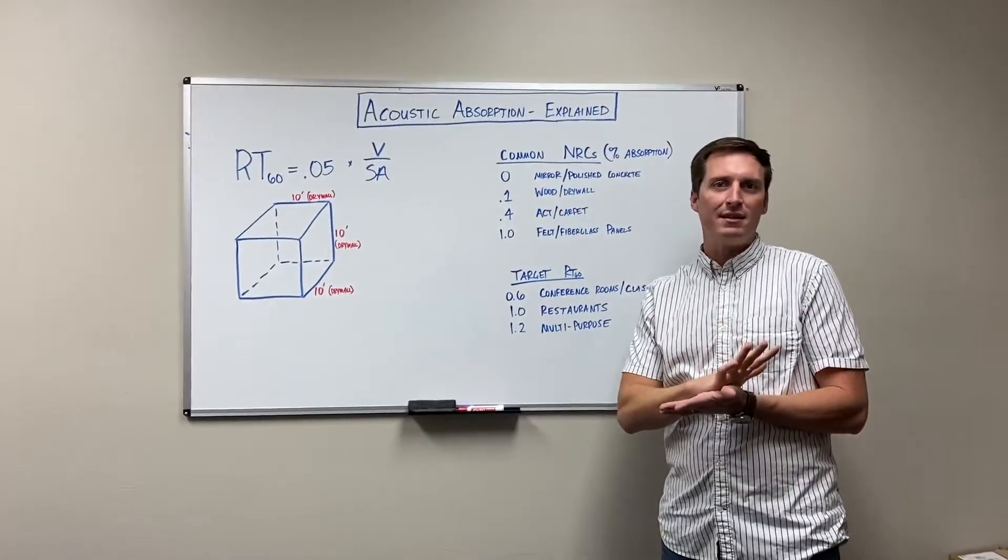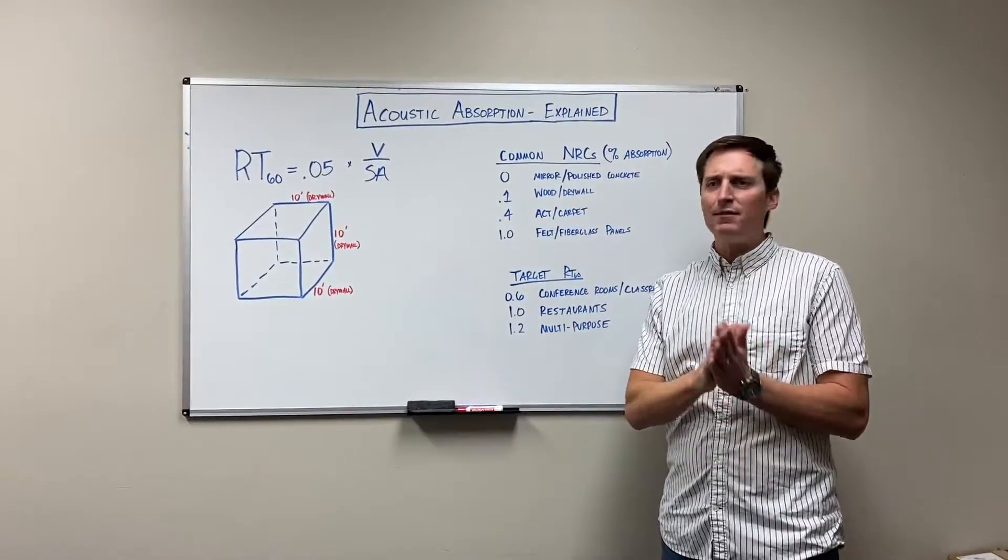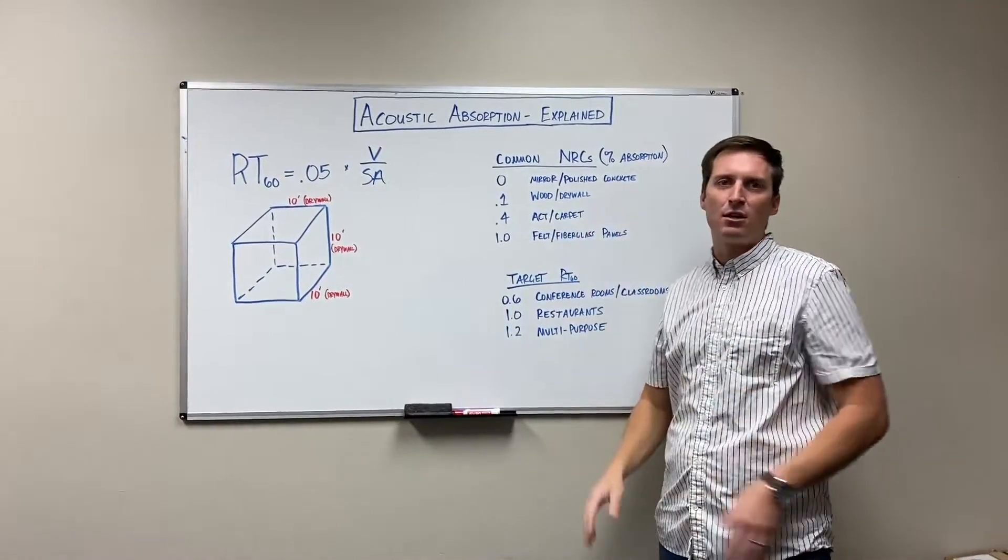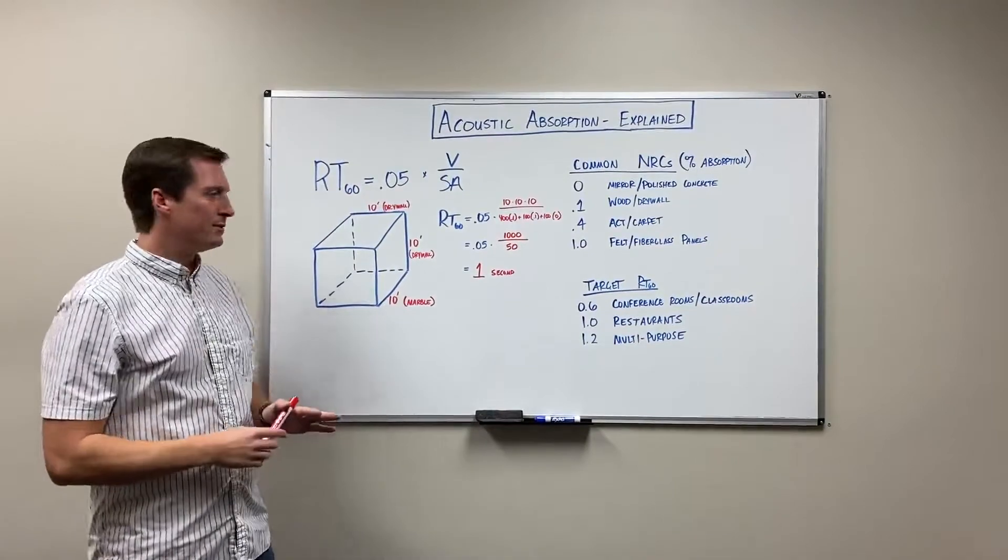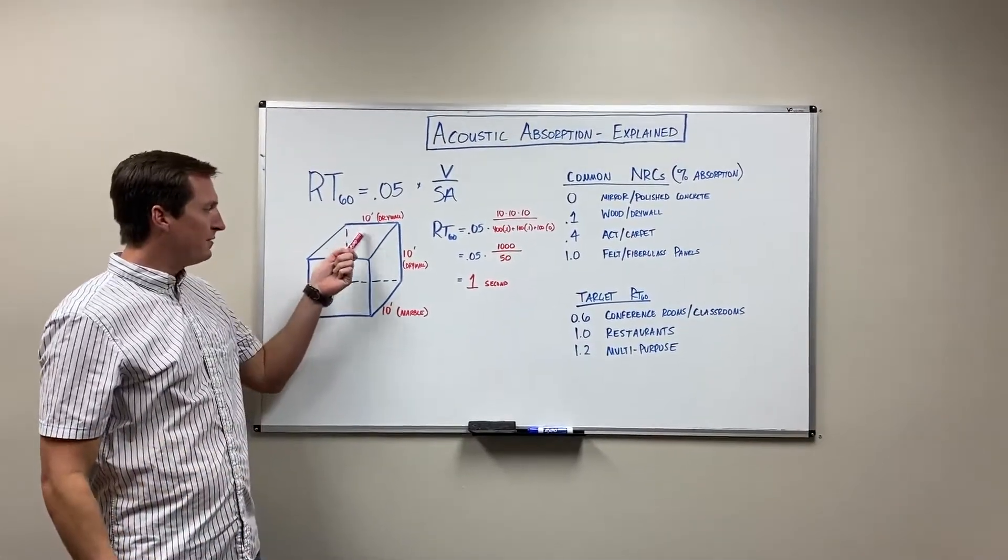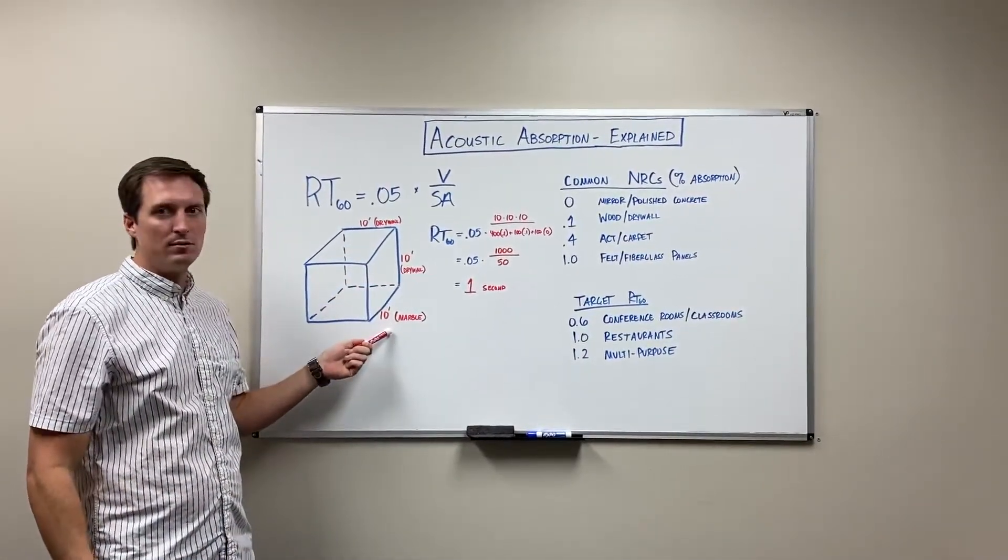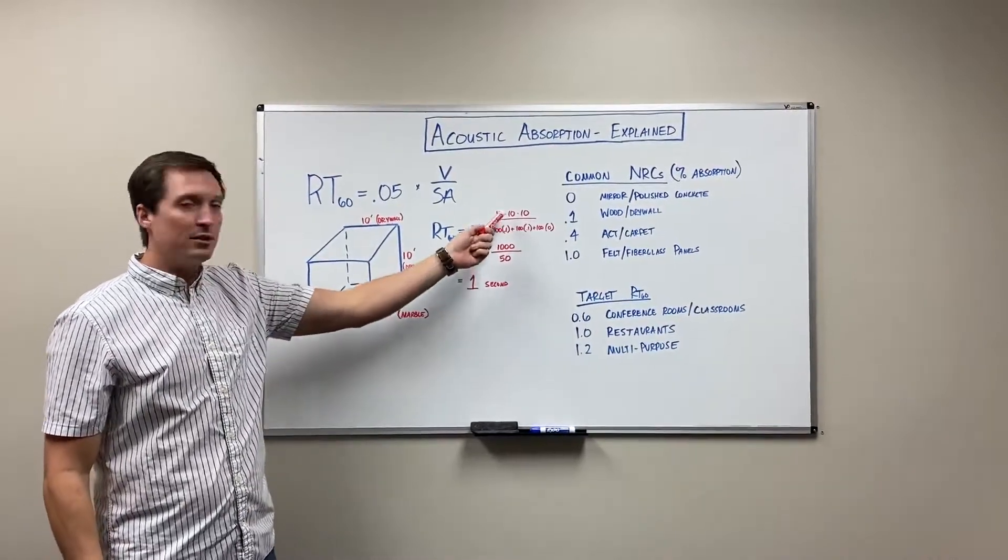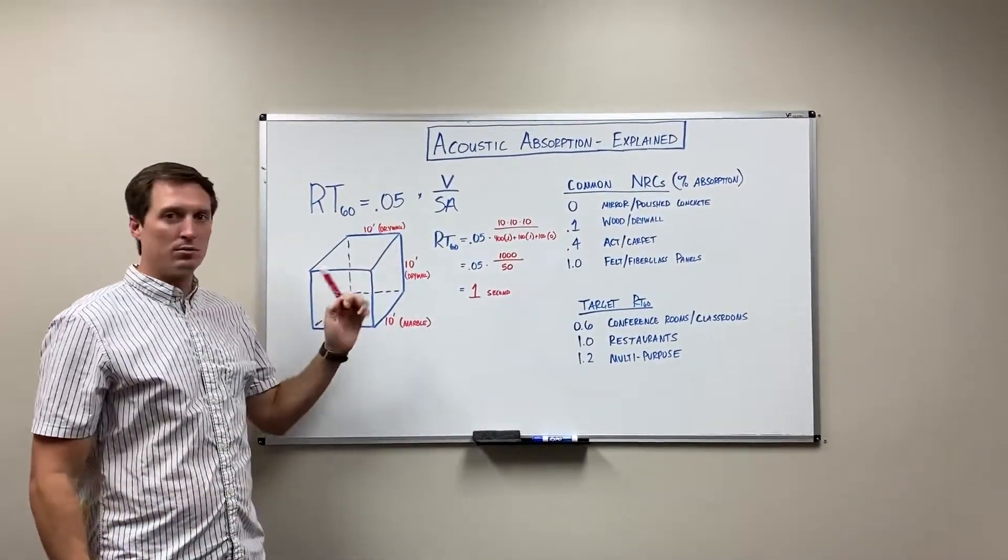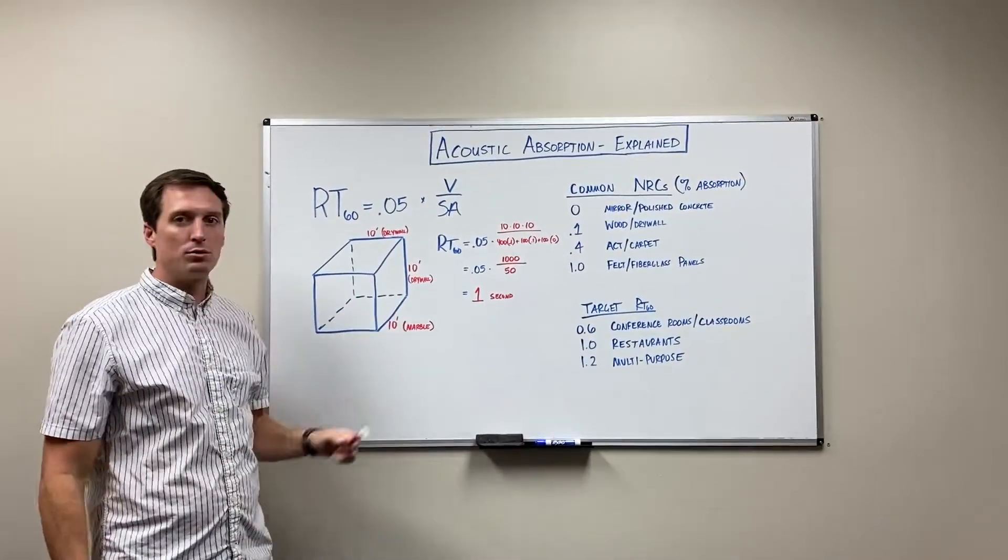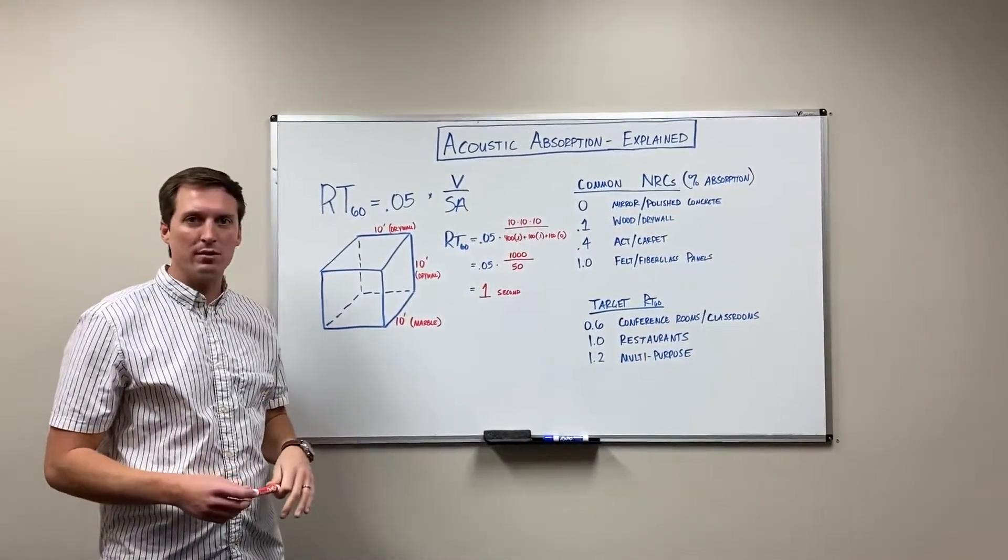So let's see if we plug this in how it affects our formula. In our first example we're going to use just the most basic room, a 10 foot by 10 foot by 10 foot. That's 1,000 cubic feet of space and we're going to assume the ceiling is drywall, the walls are drywall and the floor is marble or polished concrete.